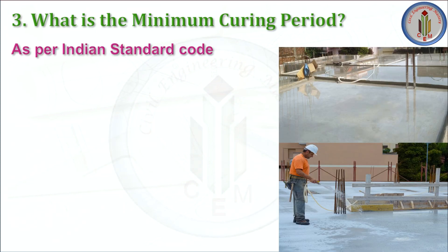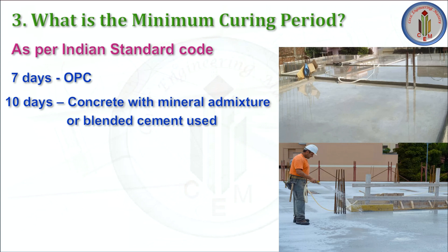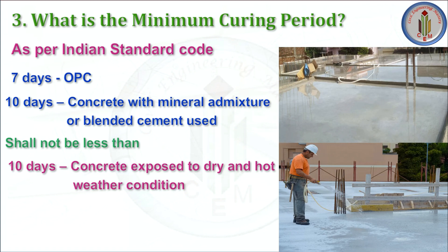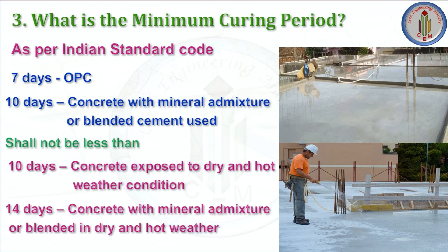Next question: what is the minimum curing period? First, why do we need to do the curing? To keep the moisture content of the concrete. Concrete always reaches its design strength in 28 days. The minimum curing period corresponds to concrete attaining 70% of the compressive strength. As per Indian standard code: 7 days for ordinary Portland cement; 10 days when concrete with mineral admixture or blended cement is used, and not less than 10 days for concrete exposed to dry and hot weather; not less than 14 days for concrete with mineral admixture or blended cement in dry or hot weather.